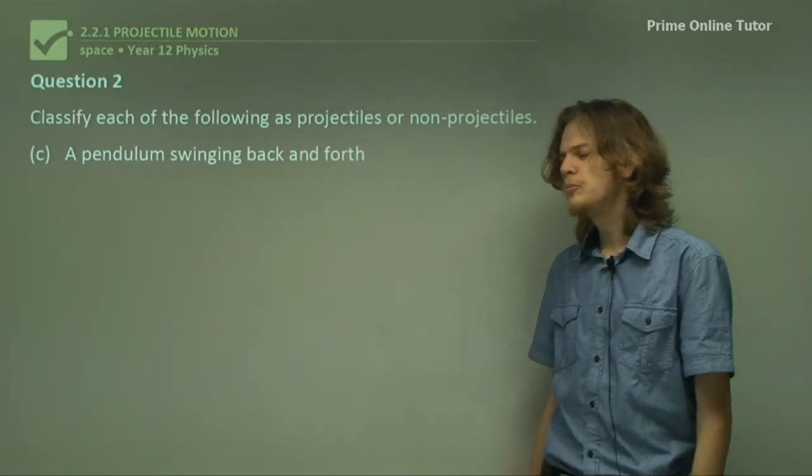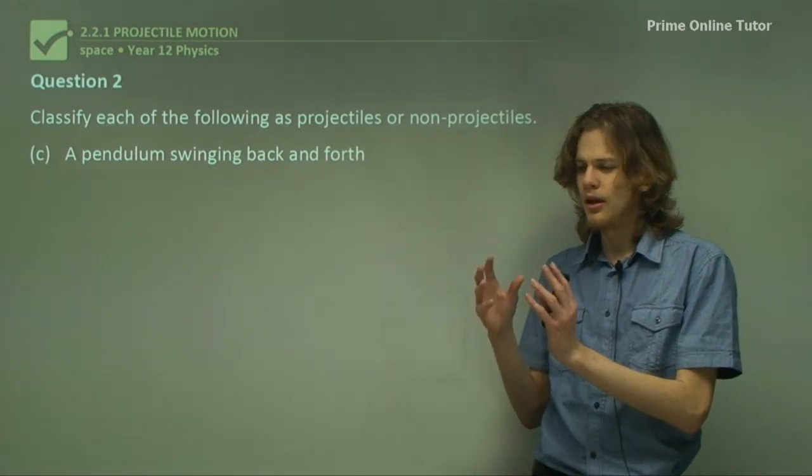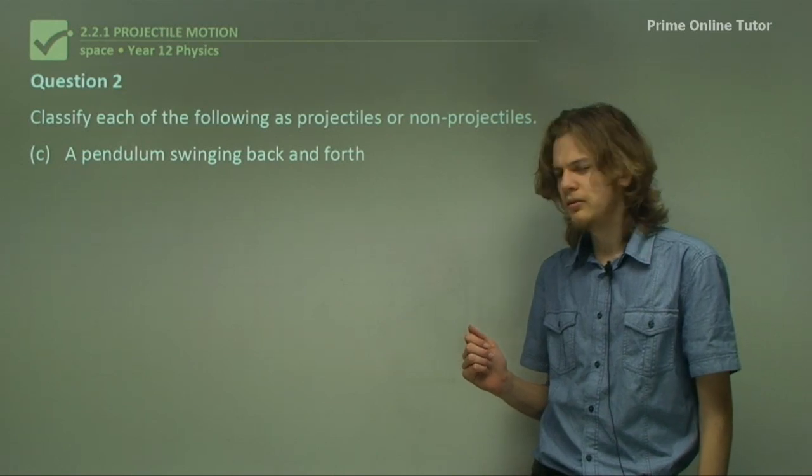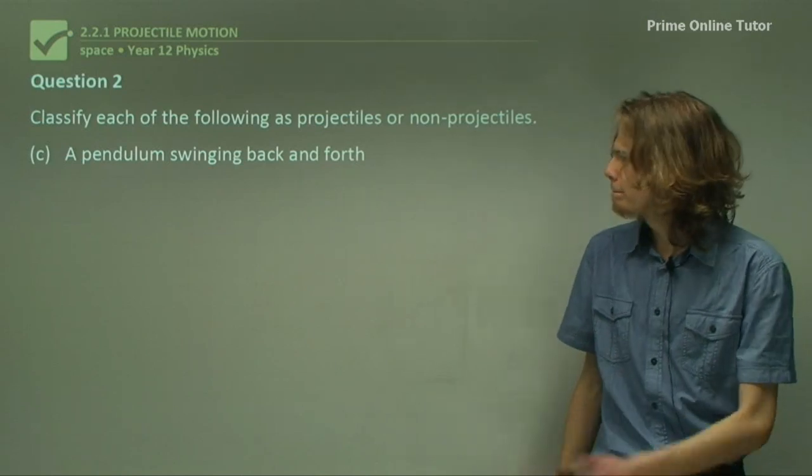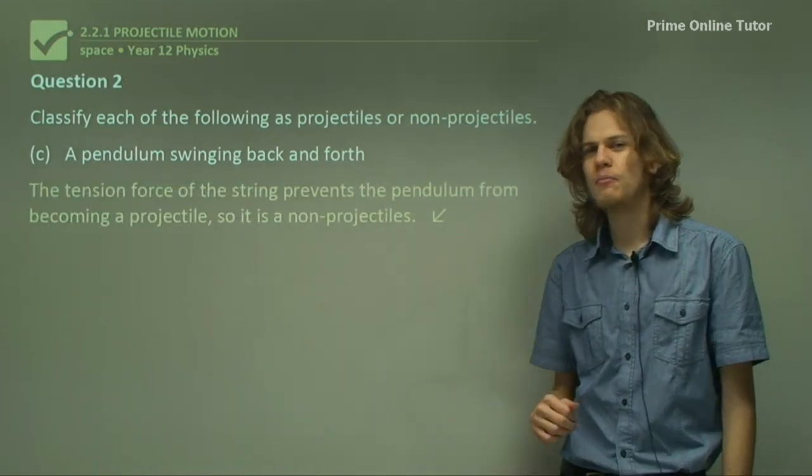C: a pendulum swinging back and forth. Now we have a pendulum, and it's in mid-air, and gravity is acting on it, but we have a tension force pulling it toward the pivot. So this tension force prevents it from becoming a projectile.